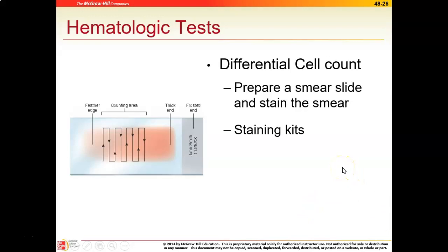Another hematologic test is called a differential cell count. This is where we take a drop of blood and make a blood smear, then look at the white blood cells and red blood cells underneath the microscope. The differential cell count looks at all the different kinds of white blood cells and gets an idea of their numbers. This is a moderate complexity test — you probably won't do this in the field, but it's a great opportunity to see red blood cells and white blood cells underneath the microscope.